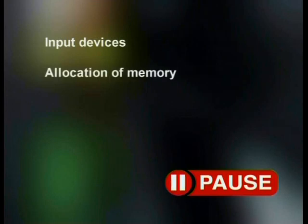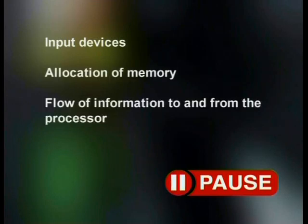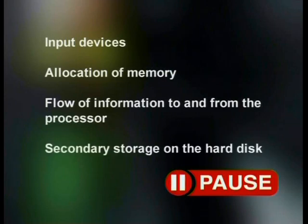In lessons 2 and 3, we learned that an operating system falls into the system software category, and that it controls all the hardware and software activities in the computer system. Operating systems control and manage many different components and processes on a computer, such as input devices, the allocation of memory, the flow of information to and from the processor, secondary storage on a hard disk, and output devices.